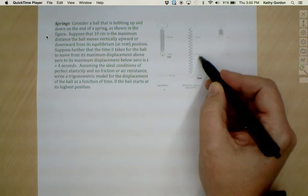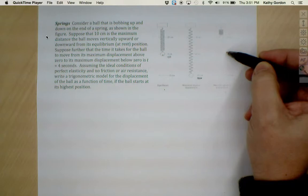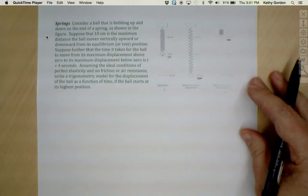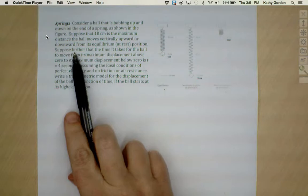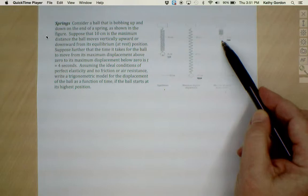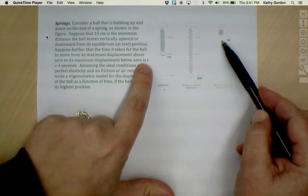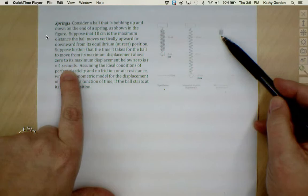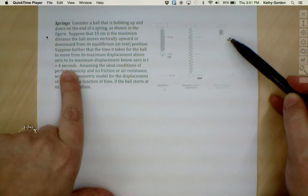When the spring is stretched, we're told that we're to suppose that 10 centimeters is the maximum distance the ball moves vertically upward and downward from its equilibrium or at rest position. So when it's stretched all the way out as far as it's going to go, that means that we're at negative 10 centimeters. We're 10 centimeters down from our resting place. And then when it bounces back up, it bounces back up as high as 10 centimeters above our resting place, and so that's positive 10 centimeters.